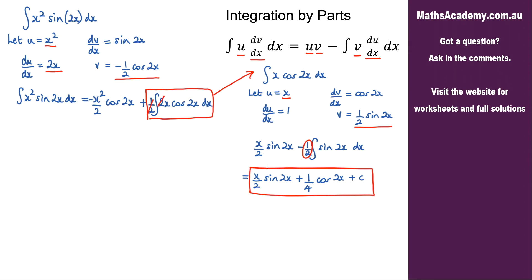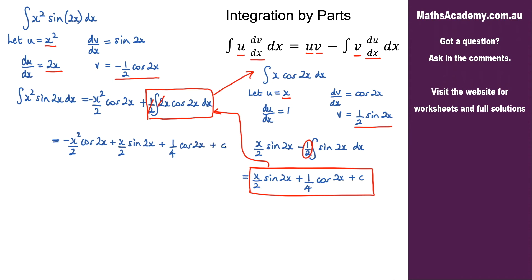Now I can substitute this result back in. What we end up with is negative x squared over 2 cosine of 2x, plus — doing the substitution — x over 2 sine of 2x plus a quarter cosine of 2x, plus the constant of integration.